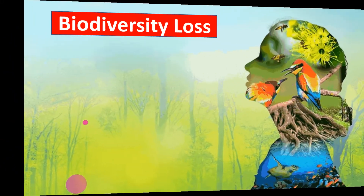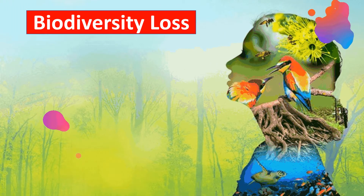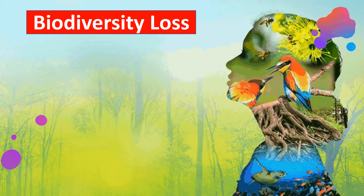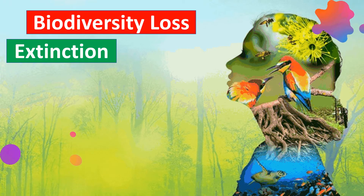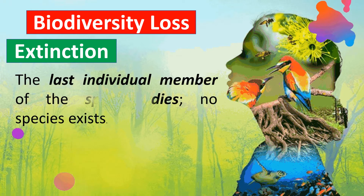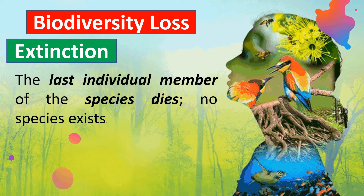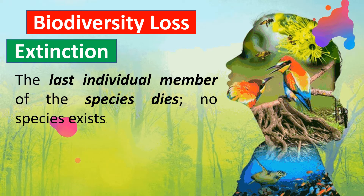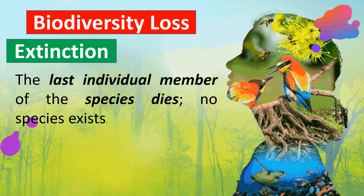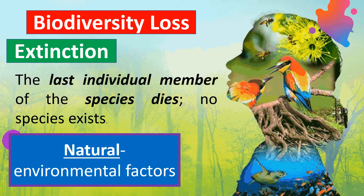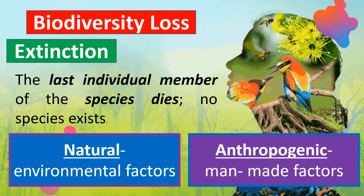Now let us go to the idea of biodiversity loss. Biodiversity loss is connected to species extinction. Always remember: extinction occurs when the last individual member of a certain species dies — when there is no more of that same species existing. The extinction of species can be caused by two factors: natural causes due to environmental factors, and anthropogenic causes, which are factors made by humans.